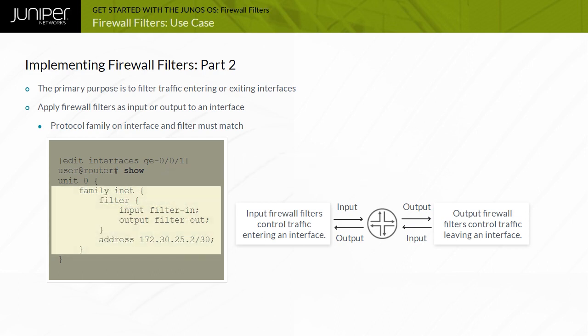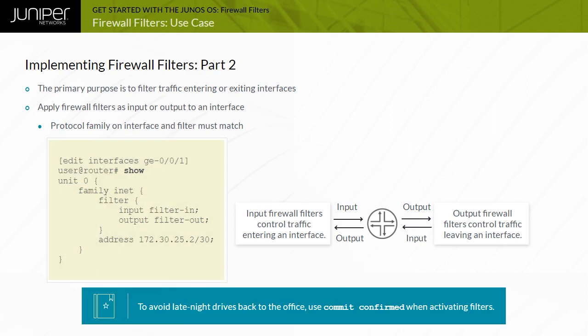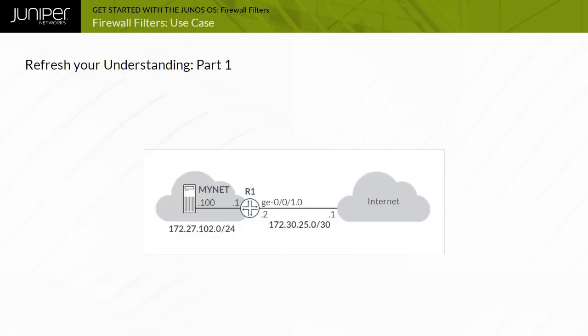You can also apply multiple filters using the input list or output list configuration options in the Edit, Interfaces, Interface Name, Unit, Unit Number, Family INET filter hierarchy. Any time you perform configuration changes from a remote location, use the commit confirmed option when activating a new configuration. This habit might prove especially helpful when working with firewall filters and might save you from a late-night trip back to the office.